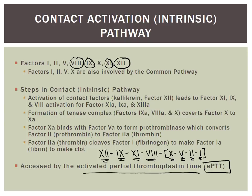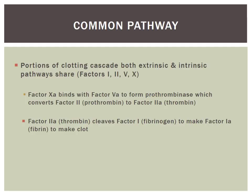The common pathway is the common portion of the cascade that involves both the intrinsic and extrinsic pathways, and it has factors 1, 2, 5, and 10. Factor 10 becomes active and binds to factor 5, causing prothrombinase to form. Prothrombinase converts prothrombin (factor 2) to thrombin (factor 2a), and then thrombin converts fibrinogen (factor 1) to the fibrin clot.